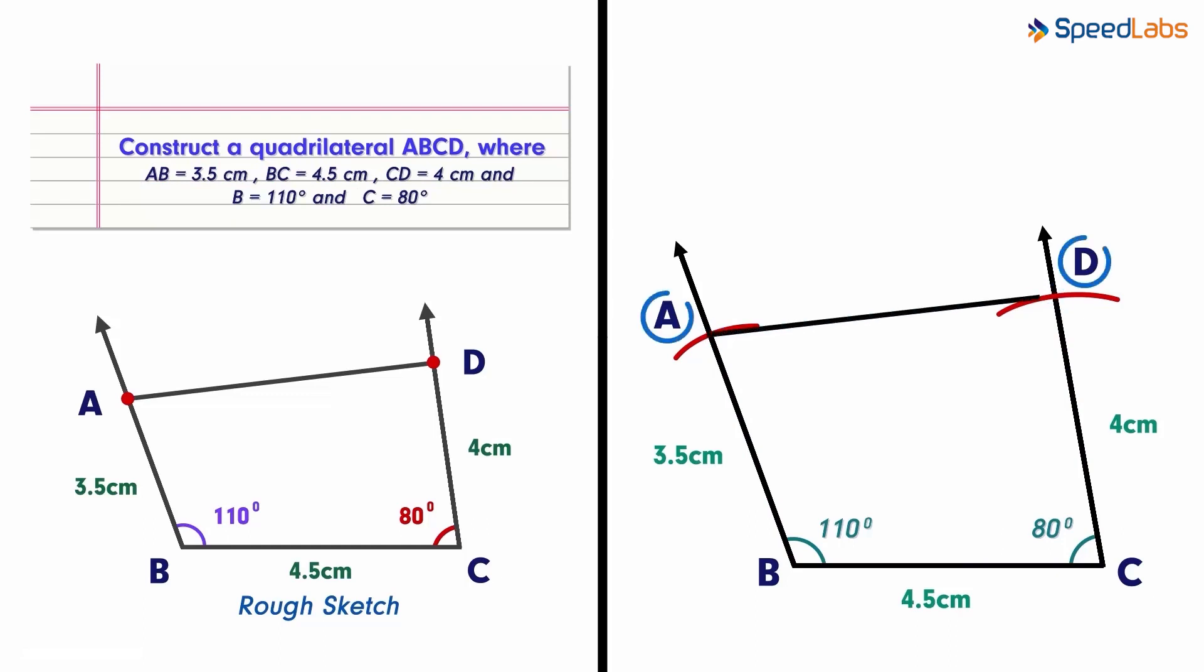Thus, by joining these two points, we get a quadrilateral ABCD. Just remember that we will always need the included angles in this case.